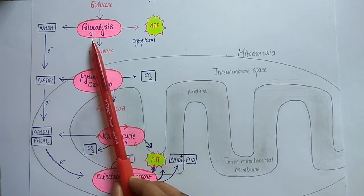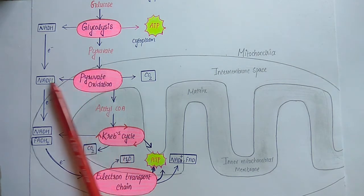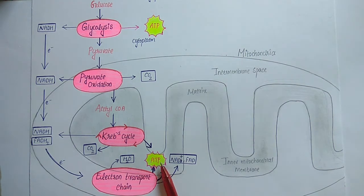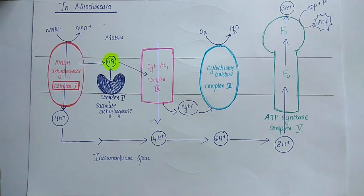NADH and FADH2 are formed during glycolysis, pyruvate oxidation, and the Krebs cycle, and they transfer electrons and protons to oxygen via the electron transport chain. During the flow of electrons and protons from organic molecules to oxygen, energy is released and utilized in the phosphorylation of ADP to form ATP molecules. The electron transport chain involves a step-by-step transfer of electrons and protons through intermediate electron carriers such as NAD, FAD, NADH, ubiquinone, cytochromes, etc. These electron carriers are organized into large functional complexes in the inner mitochondrial membrane.